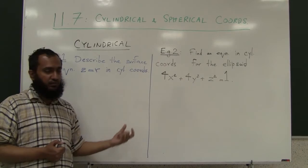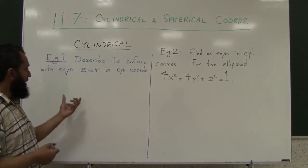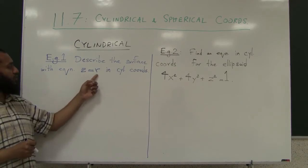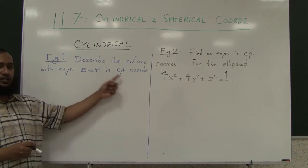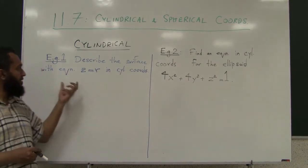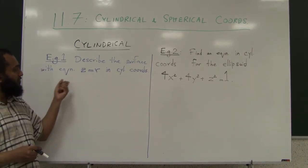Now let's look at two examples. You have been given an equation z equals r in cylindrical coordinates and you have to describe the surface. Let's try to understand what it is saying before we do the algebra to convert it to rectangular coordinates.